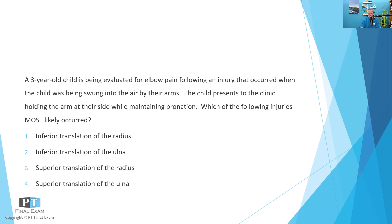A three-year-old child is being evaluated for elbow pain following an injury that occurred when the child was being swung into the air by their arms. The child presents to the clinic holding the arm at their side while maintaining pronation. Which of the following injuries most likely occurred? One: inferior translation of the radius. Two: inferior translation of the ulna. Three: superior translation of the radius. Four: superior translation of the ulna.